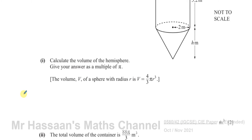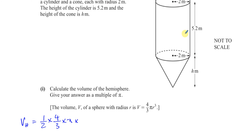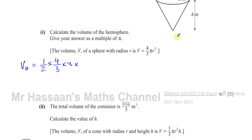To calculate the volume of the hemisphere: the volume of a whole sphere is (4/3)πr³, so the volume of a hemisphere is half of that. That's (1/2) × (4/3) × π × 2³. The 2 cancels with the 4, leaving 2 × 8 = 16, so the answer is 16π/3 meters cubed.